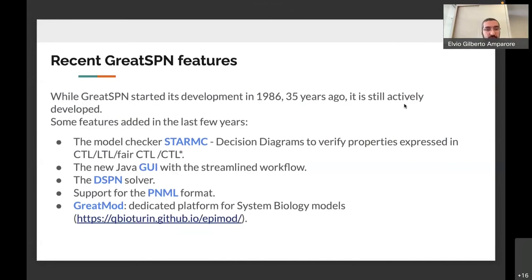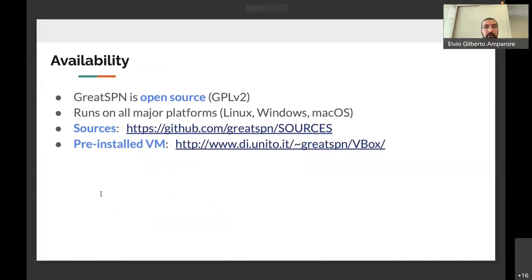Just to mention, GreatSPN is an old framework. We started the development in 1986, so it has 35 years of development and is still active development. In particular, some features that have been added recently are the efficient decision diagram model checker, the new Java GUI with the streamlining workflow which is designed for targeting students and new users, the DSPN solver, the support for PNML, and also a notable example is the GreatMod, which is a dedicated platform for systems biology models, which we have not presented here but is also worth mentioning. Finally, GreatSPN is open source under GPL version 2. It runs on all major platforms, so Linux and Mac OS. The sources are available on GitHub at this link, and we also offer pre-installed virtual machines which contain the pre-installed tools if you just want to try it without installing it on your system.